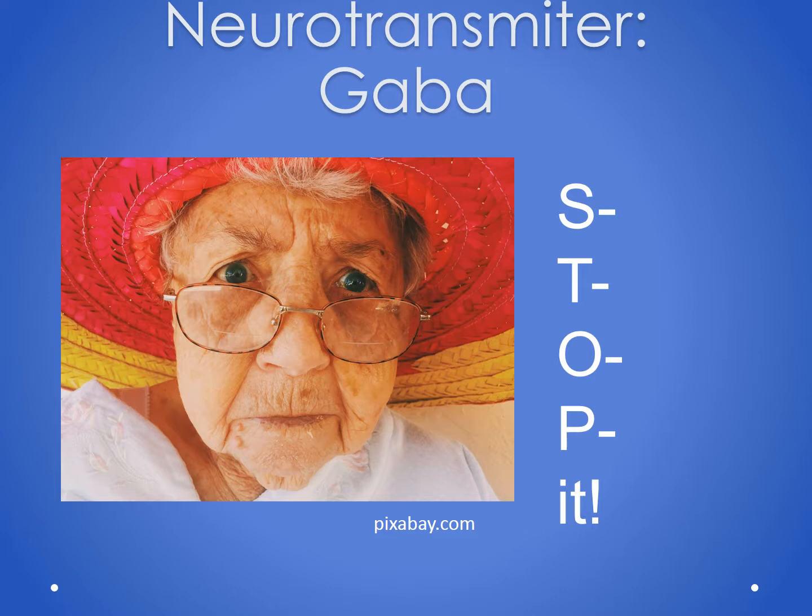S stands for suicide. When we deal with neurotransmitters, usually when we enhance one, another goes down. When we enhance GABA, serotonin — which is our happy neurotransmitter — goes down. So we have to watch patients for suicide.